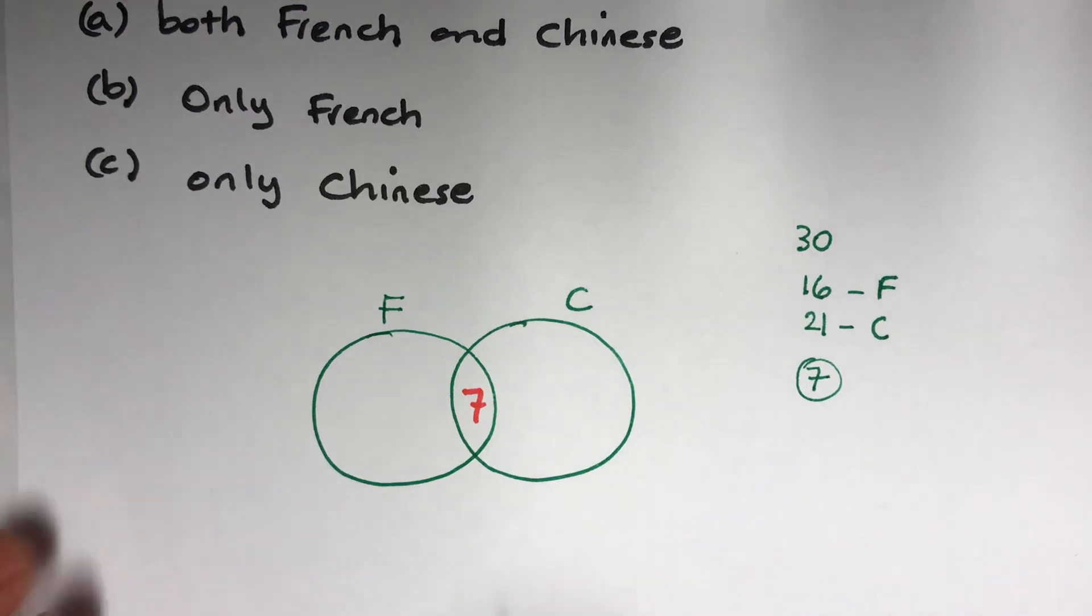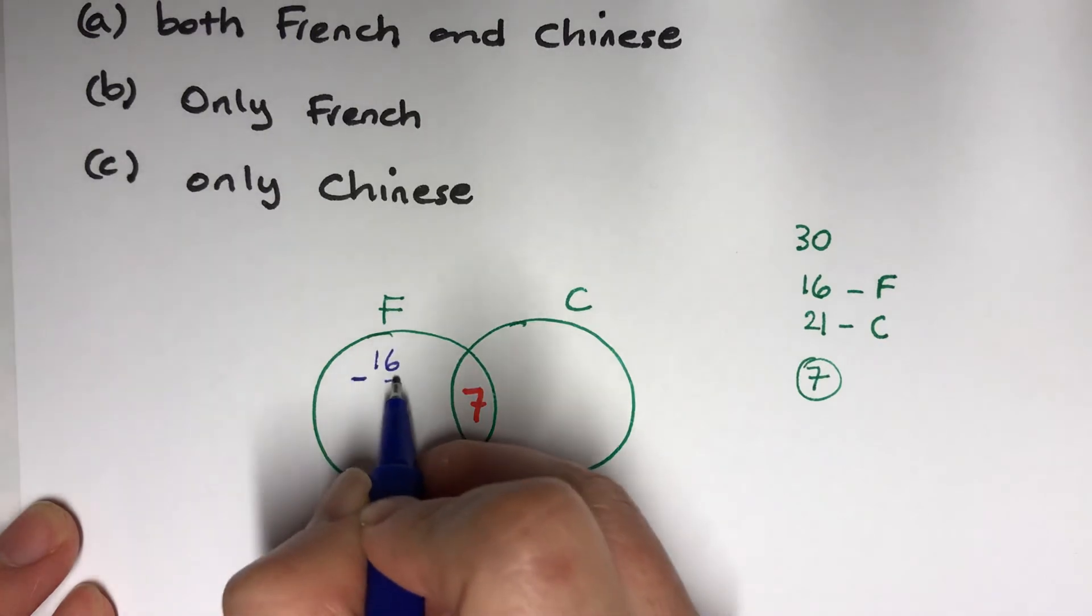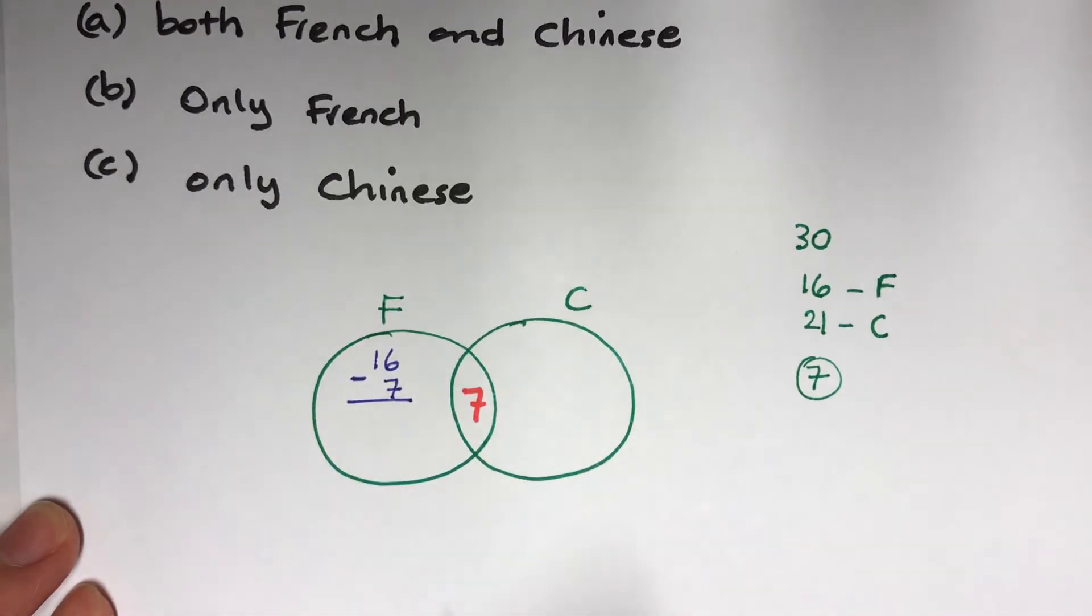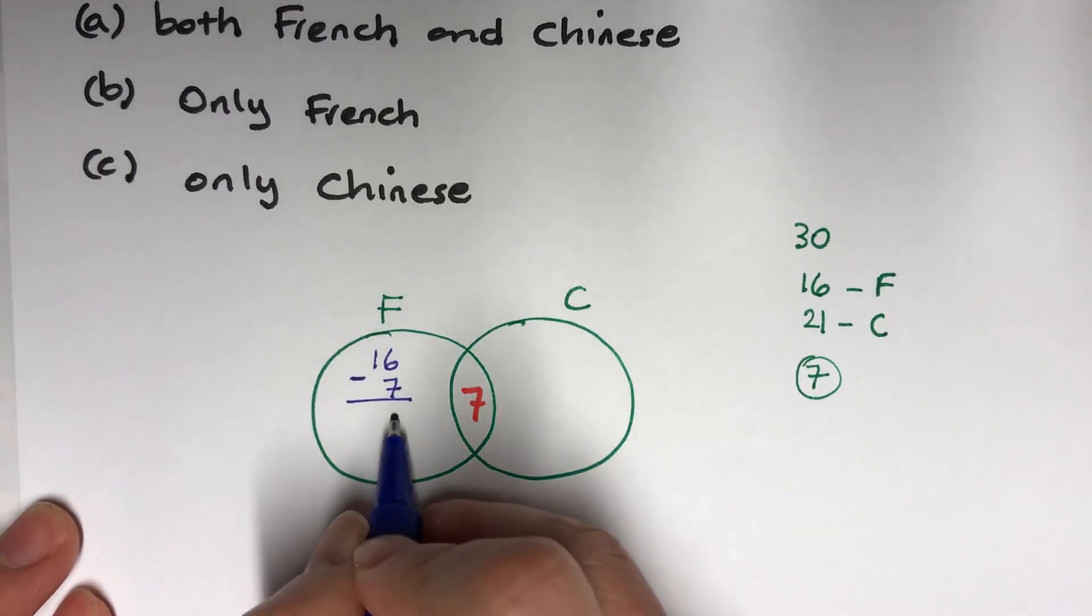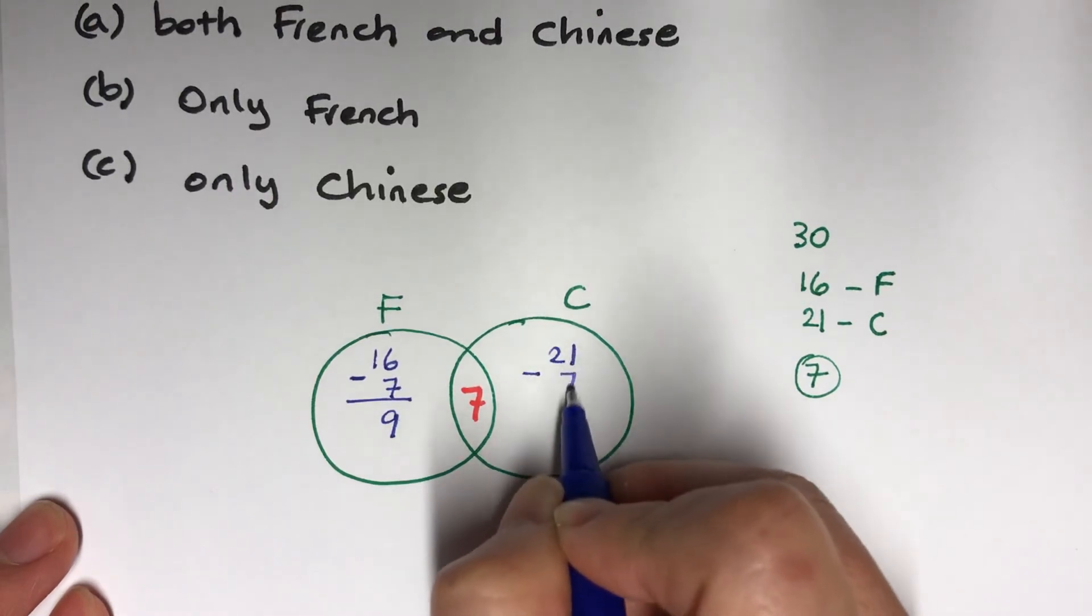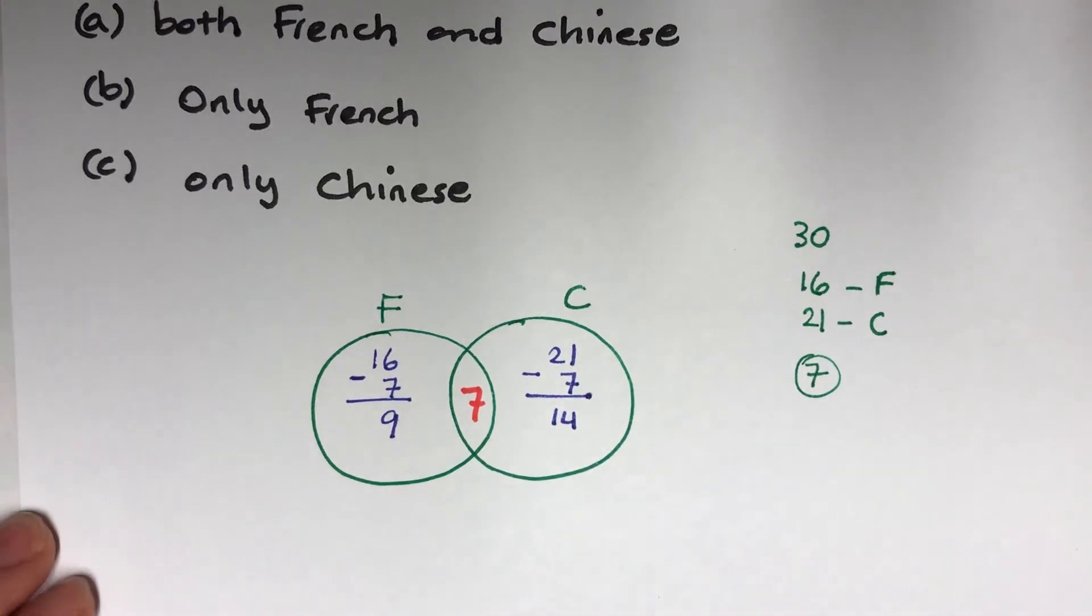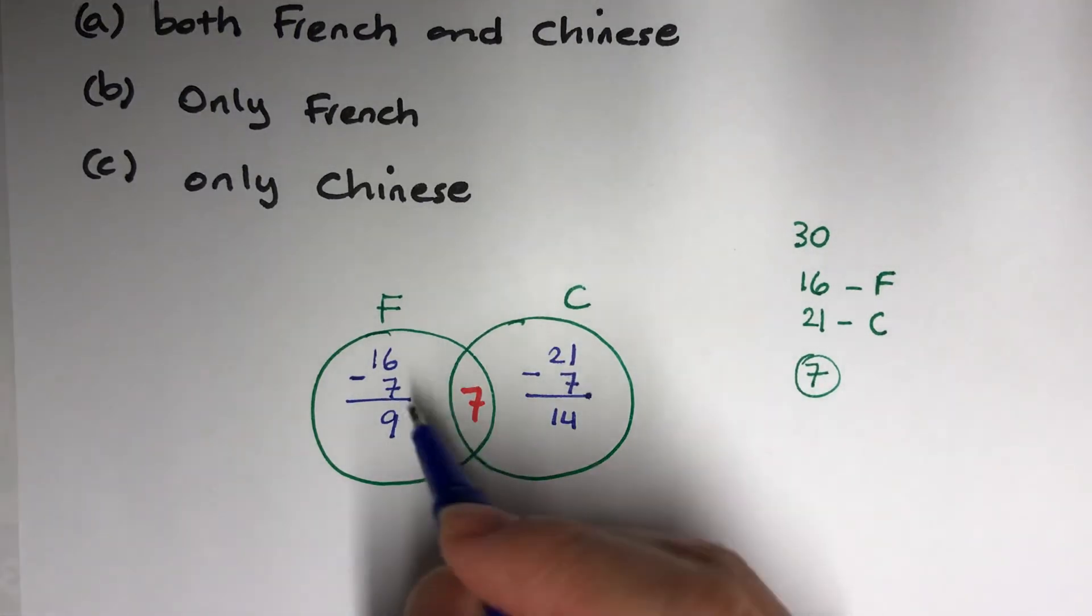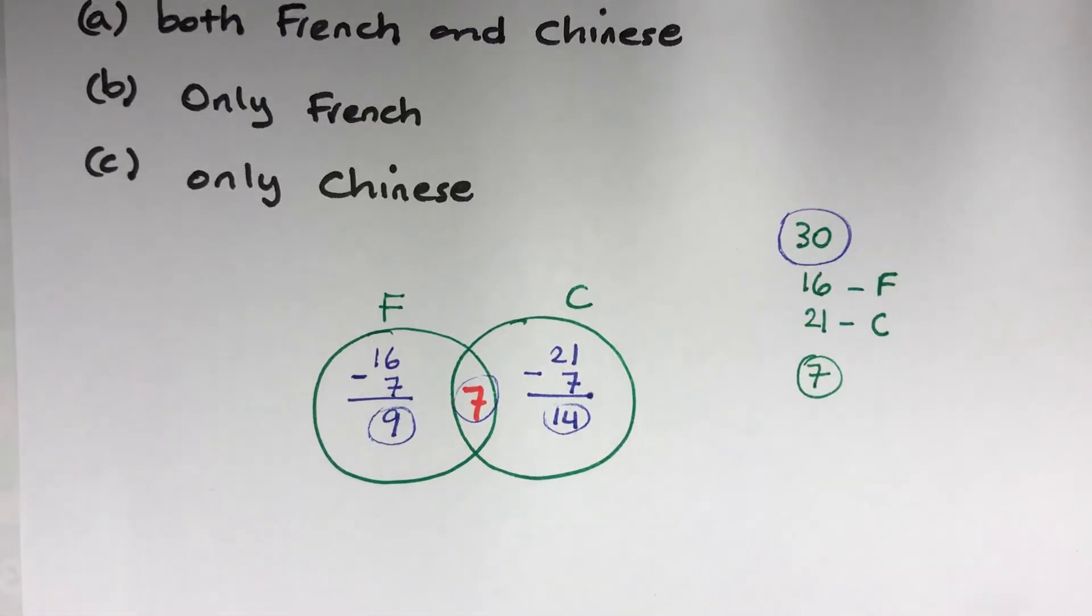I'm just going to sort it out. French was 16, but 7 of them are also doing Chinese, so they can't be purely French people. Chinese was 21, but 7 of them are doing French as well, so I'm taking them out to get pure Chinese people. Now if I add this together you will get a total of 30, so I'm ready to do three questions.